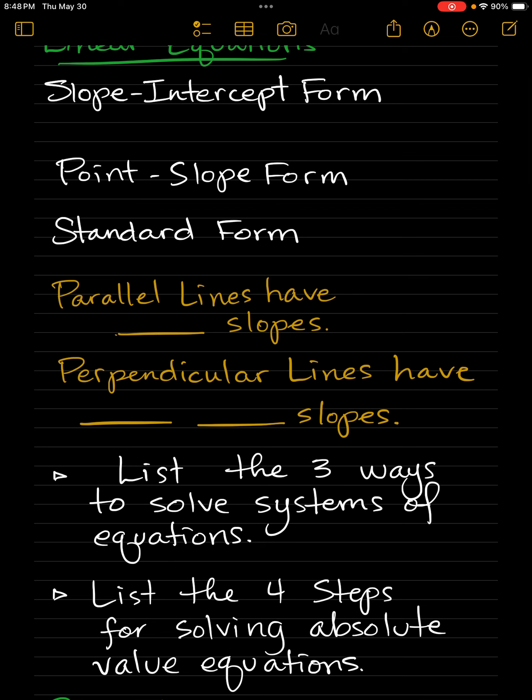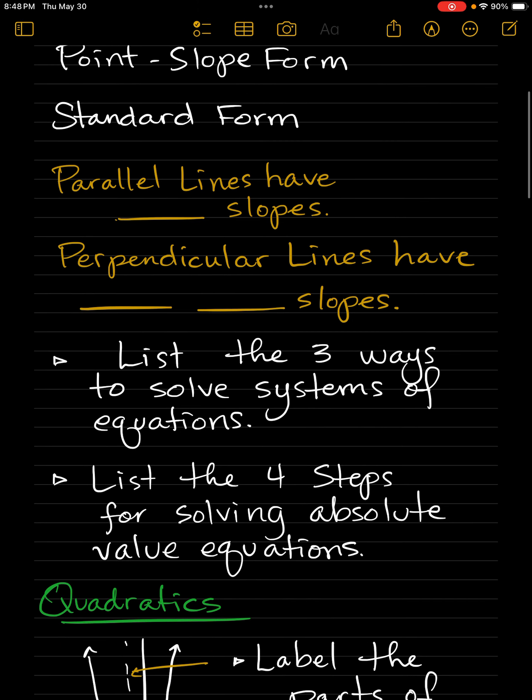You're going to do a lot of pausing as you search through. For parallel lines, I'd like you to fill in the blank. So parallel lines have blank slopes. Perpendicular lines have blank, blank slopes. You see the two blanks, that's a hint.